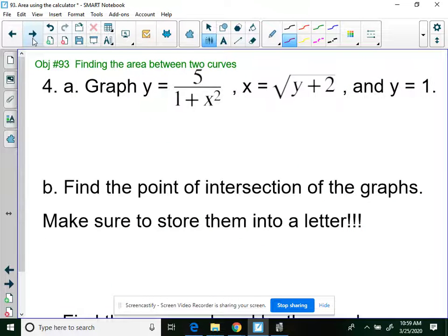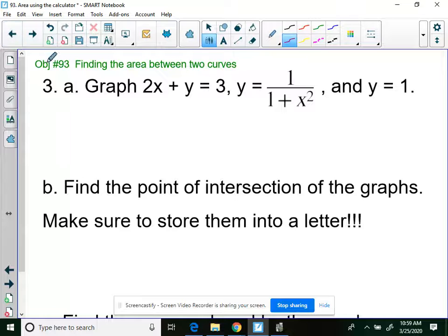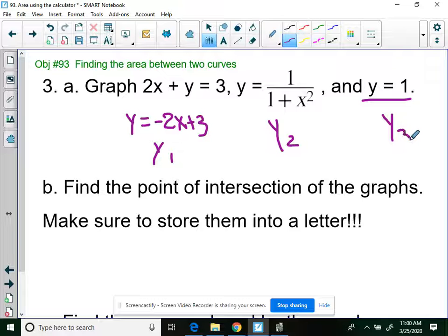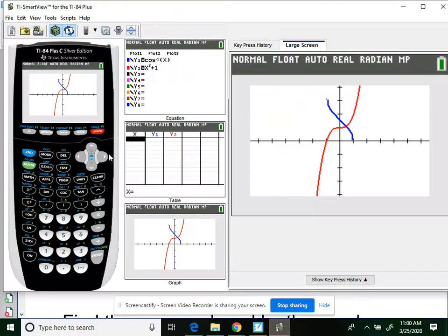Next one. How many do we have? 4. We're halfway there. Try this problem on your own. Y equals negative 2x plus 3, and 1 over 1 plus x squared, and the line y equals 1. So we actually have three equations. So this is my y1, this is my y2, and this is my y3.